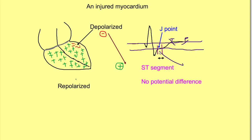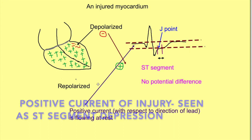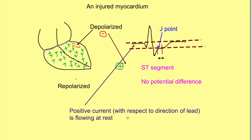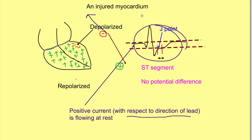The ST segment line is the actual zero potential. The potential recorded at rest is positive compared to this zero — that is why it is known as positive current of injury. However, we always have to consider this with respect to the direction of the lead. For example, in AVR, whose direction is opposite, the entire ECG will be inverted. To understand how ECG is recorded in different leads, I have made a series of videos linked in the description below.